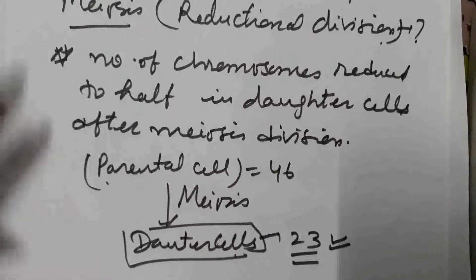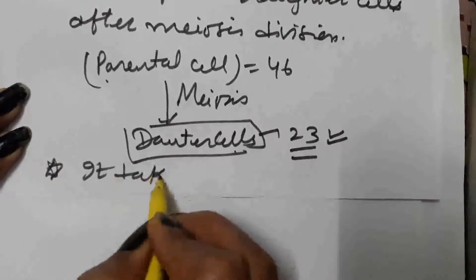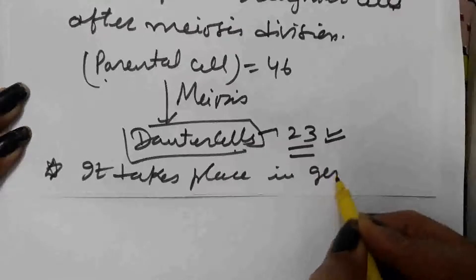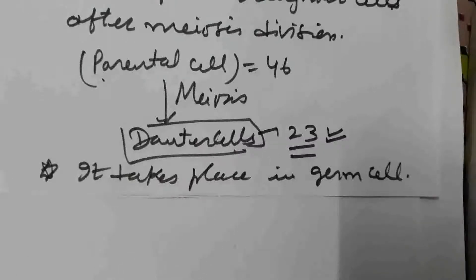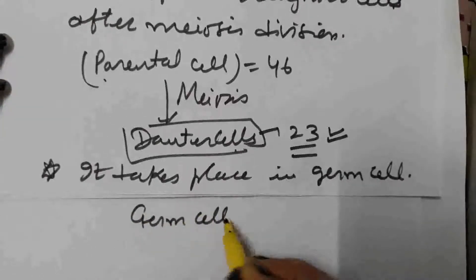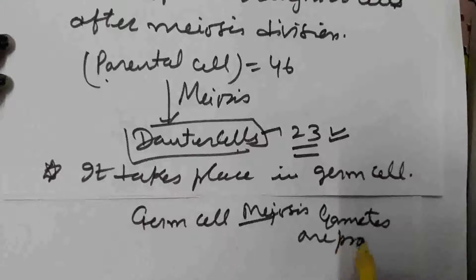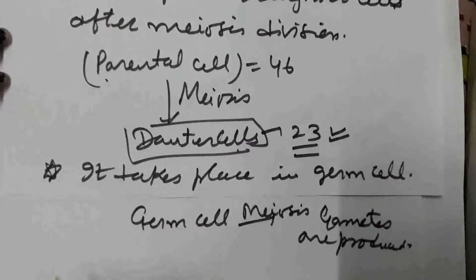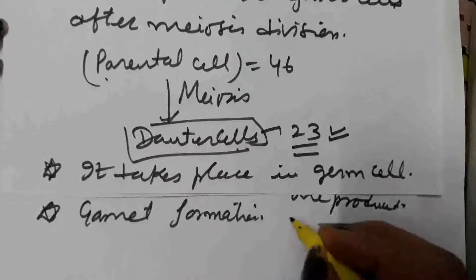Meiosis division generally takes place in germ cells. Two types of cells are present in the body: somatic cells and germ cells. Germ cells participate in reproduction. In germ cells, meiosis division takes place and gametes are produced. So for gamete formation, meiosis division takes place.